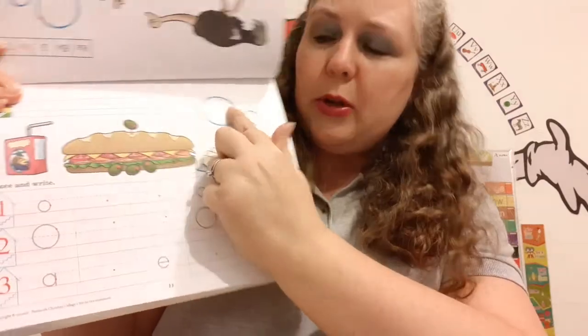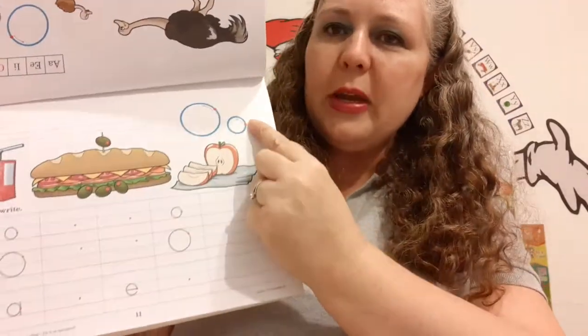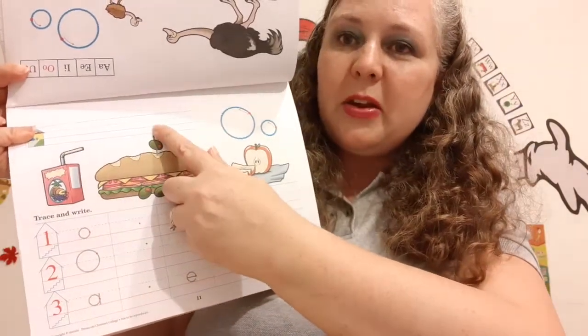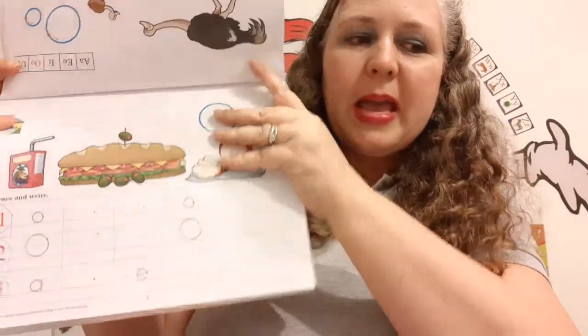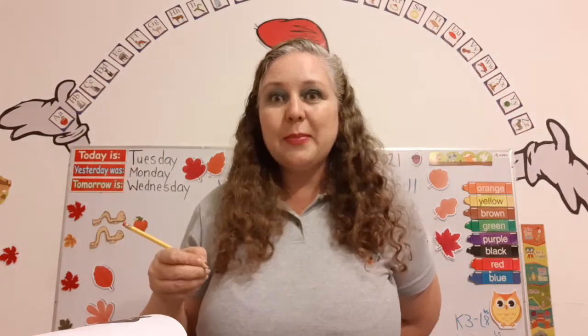So we're going to review how to write the capital O and the lowercase o, the little o. Let's make sure we write our name up here at the top of the page. Remember to hold your pencil properly with your pointer and your thumb and resting on your middle finger. Make sure to sit up nice and straight with your feet on the floor. Okay, relax your wrist.